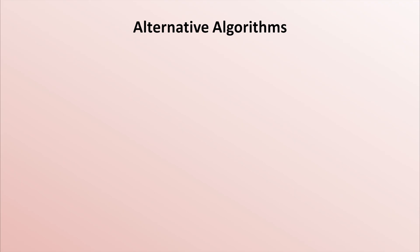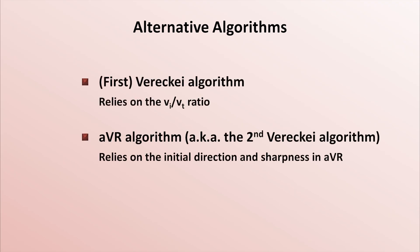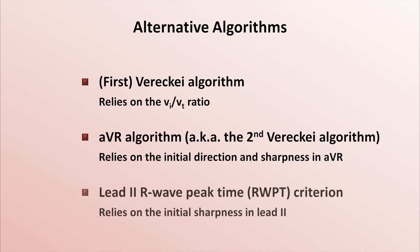In an attempt to both improve on the test characteristics as well as improve on usability, several alternative algorithms have been proposed, including the Vereckei and AVR algorithms, as well as the lead-2 R-wave peak time criterion. These all rely heavily on an assessment of how sharp the initial QRS deflection is, in which a sharper deflection suggests that the Purkinje fiber network is being used to initiate the complex, suggesting a supraventricular origin. However, none have gained wider acceptance than Brugada.